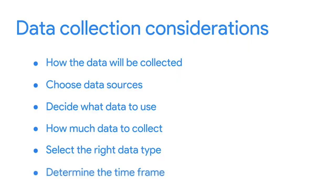We'll explore this topic in more detail soon. Finally, you need to determine the time frame for data collection. In our example, if you needed an answer immediately, you'd have to use historical data, which is data that already exists. But let's say you needed to track traffic patterns over a long period of time — that might affect the other decisions you make during data collection. And now you know more about the different data collection considerations you'll use as a data analyst. There's still more to learn about data collection, so stay tuned.